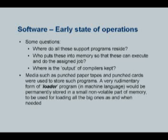There are key questions: where do all support programs reside, who puts them in memory, and where is the output of compilers kept? The answer is disk — everything is on the disk. The compiler sits on the disk, and when you say c++, the compiler gets loaded into memory and executes to read our program as data and translate it. The .o files and a.out files go back onto the disk. There was a time — a long period — when there were no disks or magnetic media. Media such as punch cards and punched paper tapes were used to store programs.